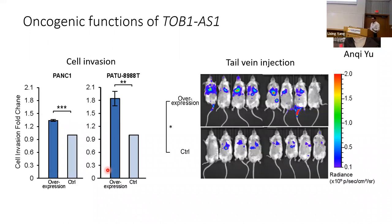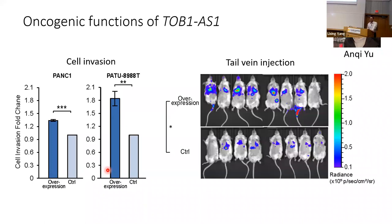Answer: For the hourglass chromothripsis signature, we used linked reads to truly reconstruct the complex structure of a bizarre chromosome. Long-read sequencing is not generally available for cancer — only very limited datasets exist. We happened to have the hourglass signature enriched in prostate cancer, and there is a published linked-read sequencing dataset for prostate cancer from 10x Genomics that we used.